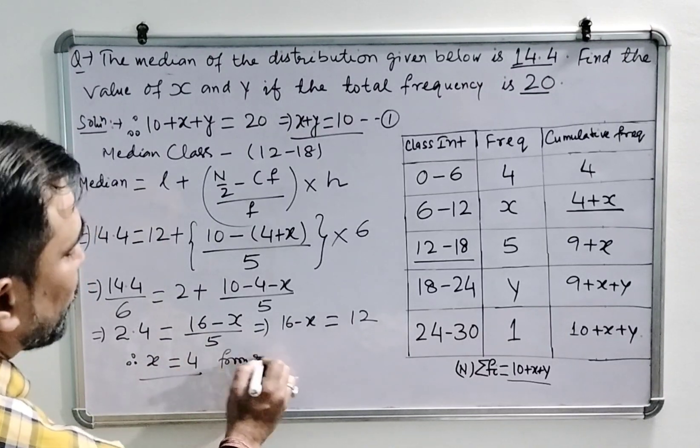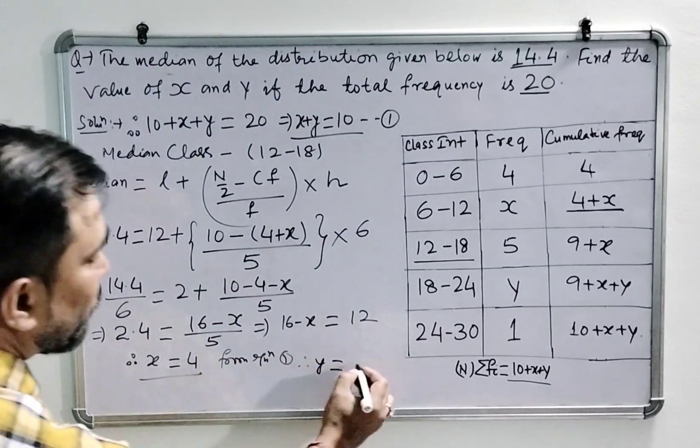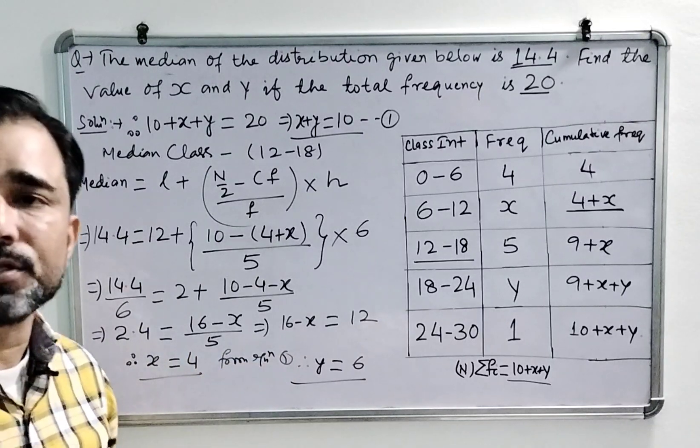Now from equation 1, x plus y is 10, so y will be 10 minus 4, that is 6. So the values of x and y are 4 and 6 respectively. That's all, thank you.